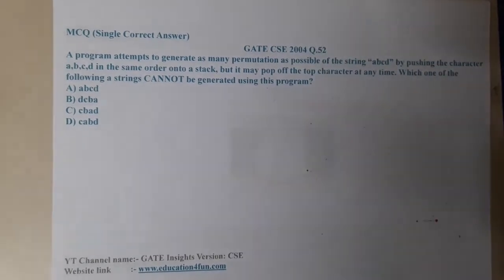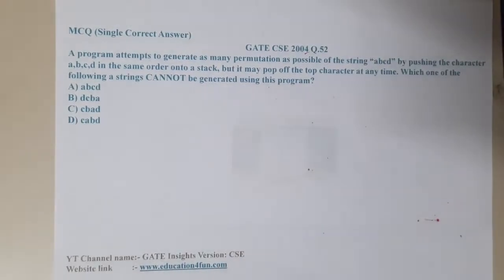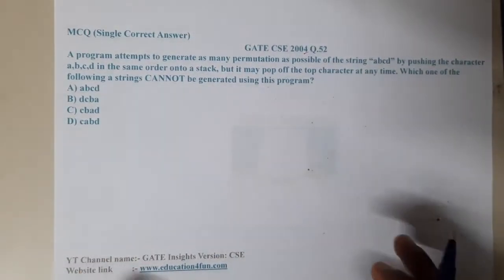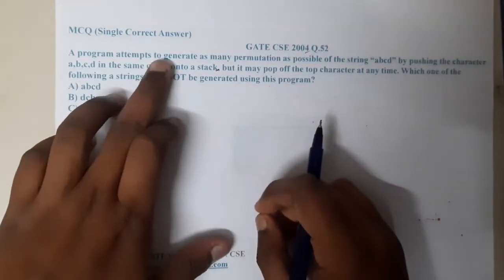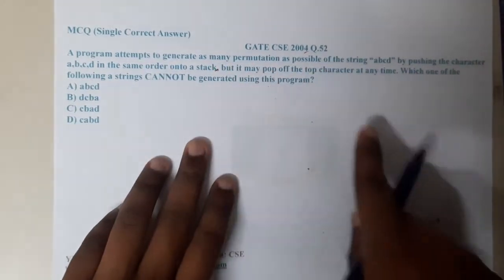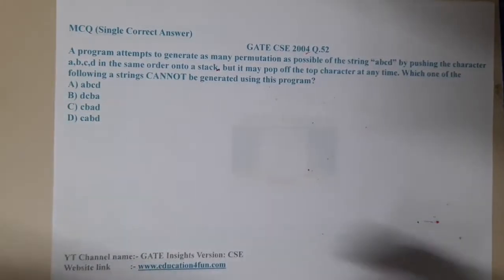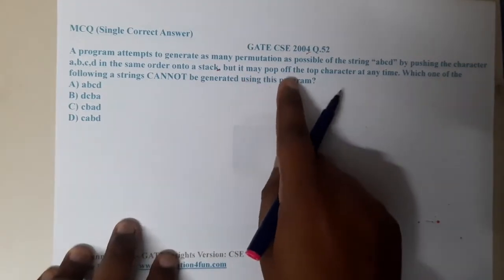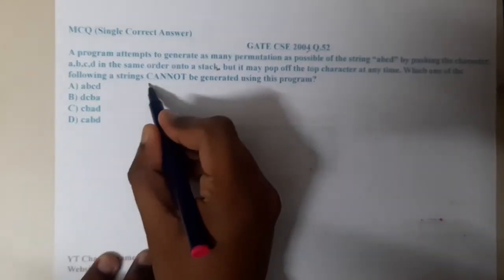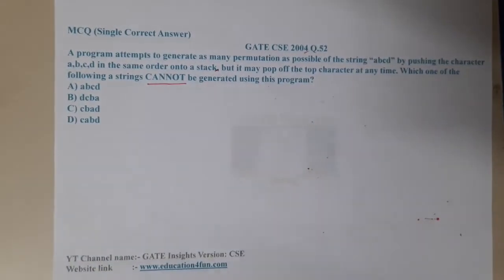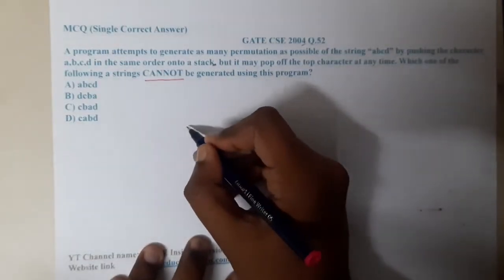Hello guys, we are back with our next lecture. Let us continue with the next question — GATE CSE 2004, the 52nd question. This question also belongs to stack. A program attempts to generate as many permutations as possible for a string a, b, c, d by pushing the characters a, b, c, d in the same order, but it may pop off the top character at any time. Which one of the following cannot be generated?